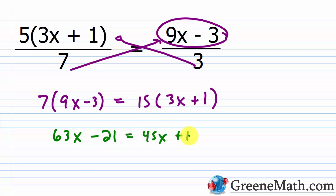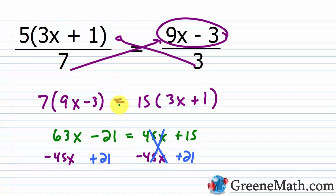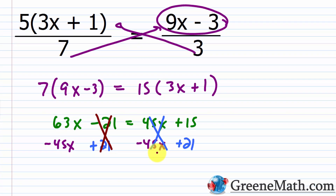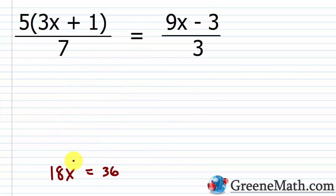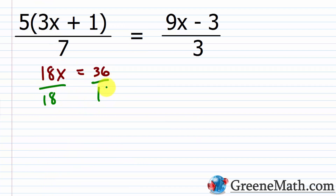On the right: 15 times 3x is 45x, and 15 times 1 is 15. Subtracting 45x from each side and adding 21 to both sides: 63x - 45x is 18x, and 15 + 21 is 36. Dividing both sides by 18, x = 36/18 = 2.